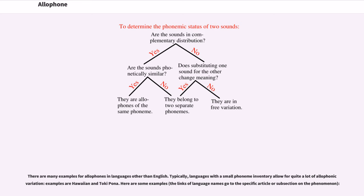There are many examples for allophones in languages other than English. Typically, languages with a small phoneme inventory allow for quite a lot of allophonic variation; examples are Hawaiian and Toki Pona. Here are some examples: the links of language names go to the specific article or subsection on the phenomenon.